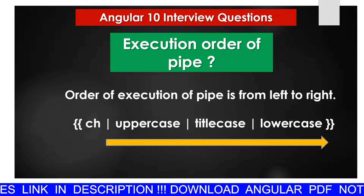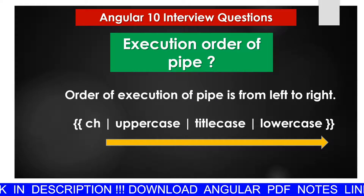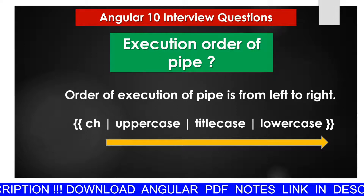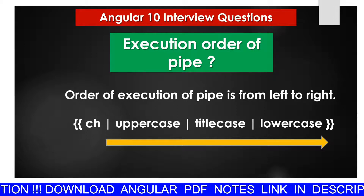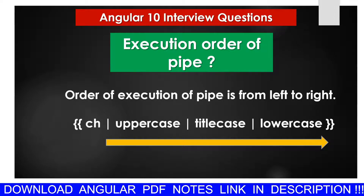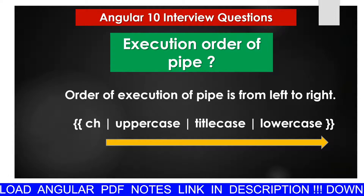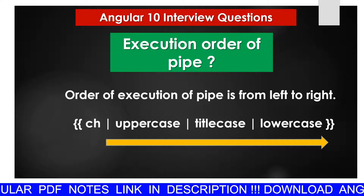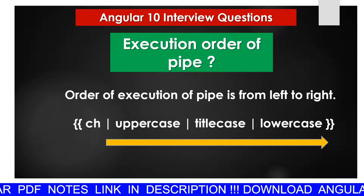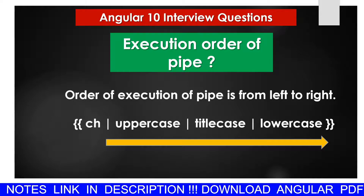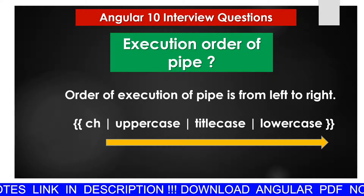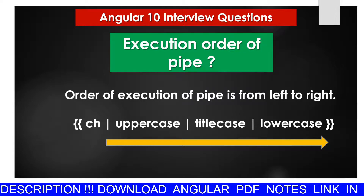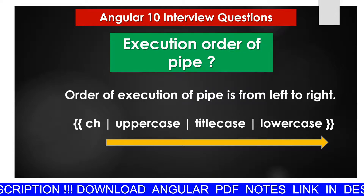What is the execution order of pipe? The order of execution of pipe is from left to right. For example, if you chain uppercase, titlecase, and lowercase, it starts from uppercase, then the output of uppercase becomes the input of titlecase, and the output of titlecase becomes the input of lowercase. So the final output will be in lowercase.